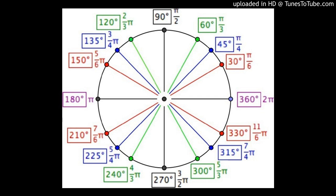The convention is: if the rotation of ray OA is in the anticlockwise direction, then the angle is called a positive angle. If ray OA takes the clockwise direction, then the angle formed is a negative angle. Note that angle AOB is not the same as angle BOA.